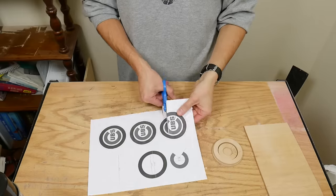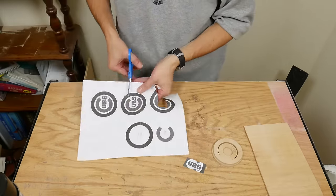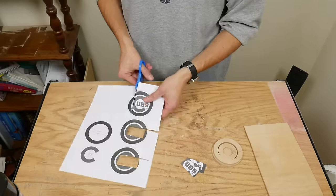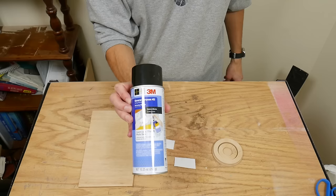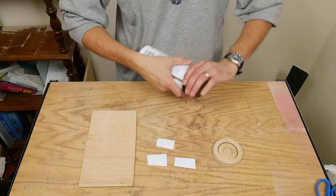Then I cut out a couple copies of the other letters just in case I messed up the first one. I used spray adhesive to stick the letters to another piece of plywood.